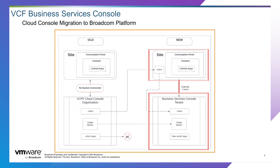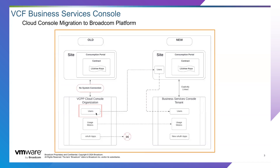We will be performing a user migration to limit any interruptions in partner user access and job responsibility. Active users of the VCPP Cloud Console organizations identified for migration will be added to the org's corresponding site and created as users in the new Business Services Console tenant with mapped roles and permissions, so that users will be able to perform the same job functions in the Business Services Console tenant that they were able to perform in the VCPP Cloud Console organization. We will not be giving any users any access to the consumption portal, the contracts, or the license keys.